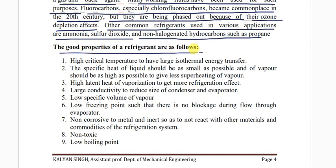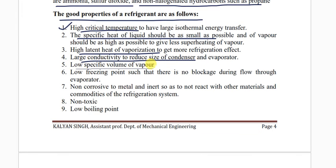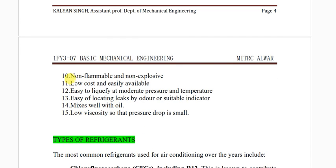The good properties of a refrigerant are: high critical temperature, small specific heat of liquid, high latent heat of vaporization, large conductivity to reduce the size of the condenser, low specific volume of vapor, low freezing point to prevent blockage in the evaporator, non-corrosive to metal and inert so as not to react with other materials in the refrigeration system, non-toxic, low boiling point, non-flammable and non-explosive, low cost and easily available, and easy to liquefy at moderate pressure and temperature.